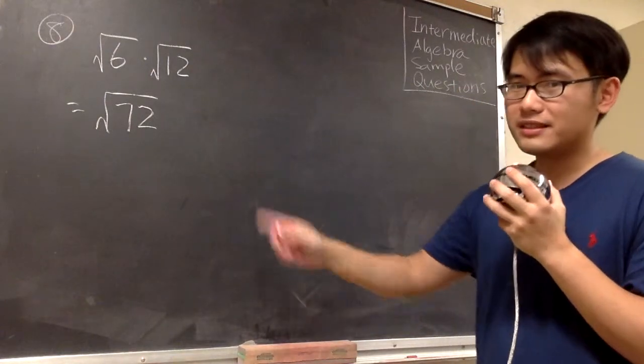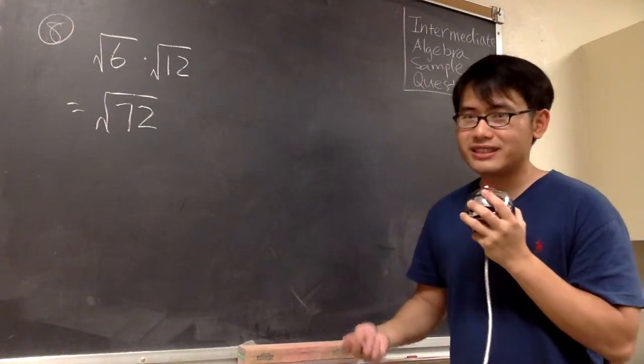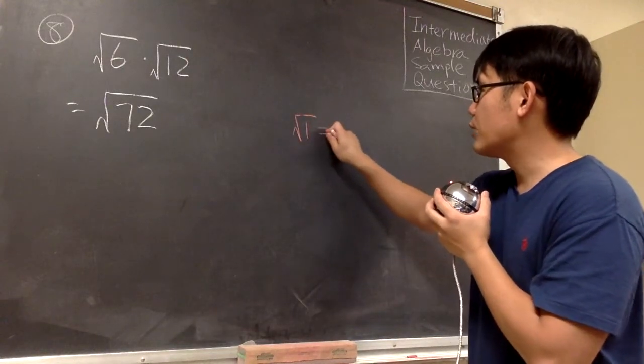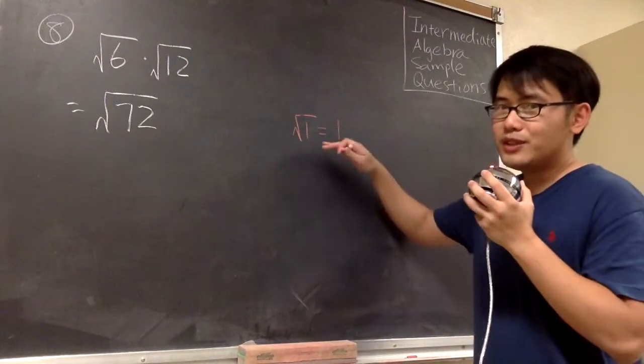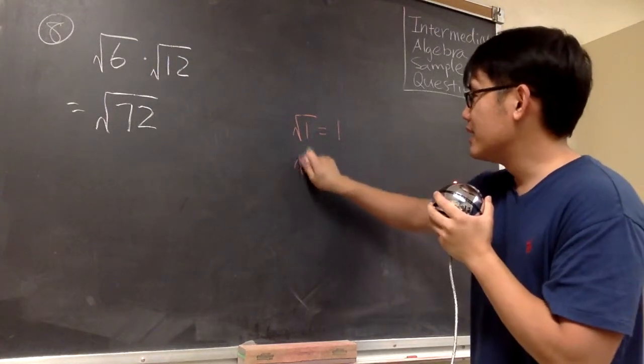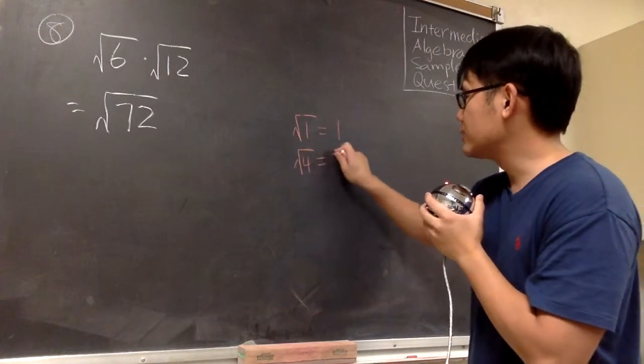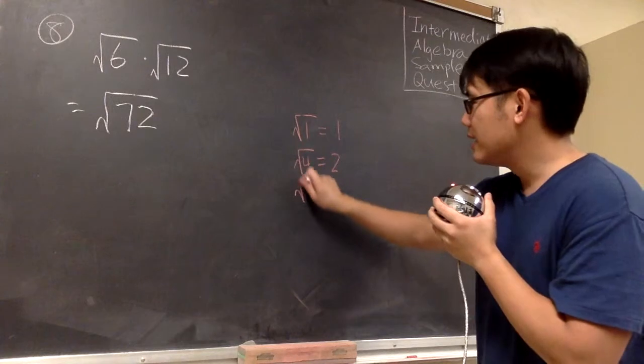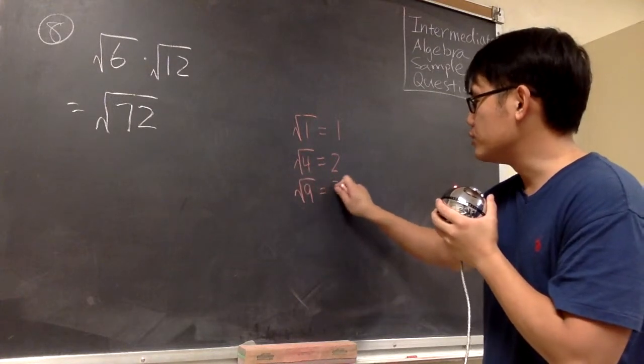But to simplify this, we must know the perfect squares. To begin with, I will start with square root of one, and that will give us one - even though we are not going to use one, but this is just a good start. The next number is square root of four, that will give us two because two times two gives us four. Next is square root of nine, that will give us three because three times three is nine. Then square root of 16, that will give us four.